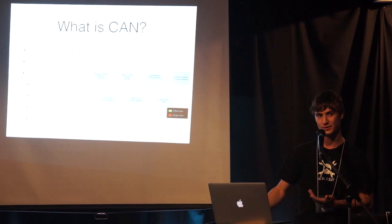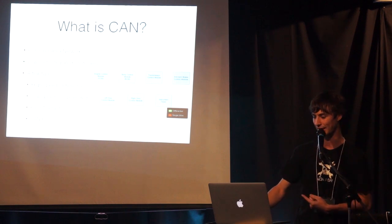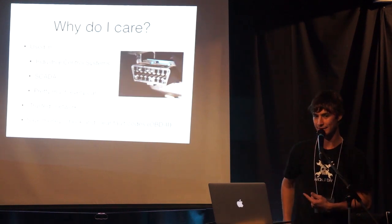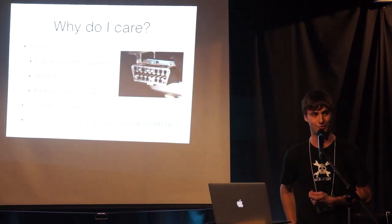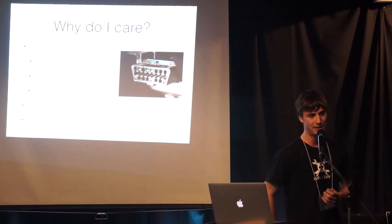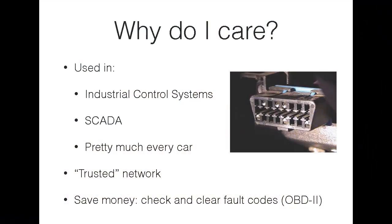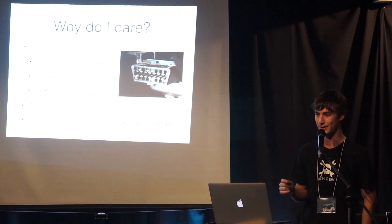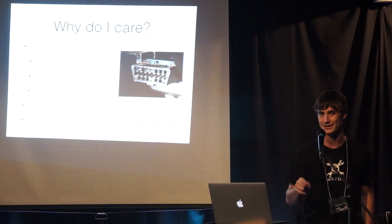Most cars have somewhere between 50 and 100 controllers. Some cars have a controller in every single door handle. This is used in a lot of things — industrial control, SCADA systems — but pretty much every car. After 2008 you can almost be guaranteed that whatever car you're working with has CAN.